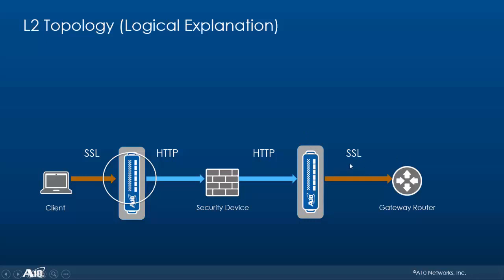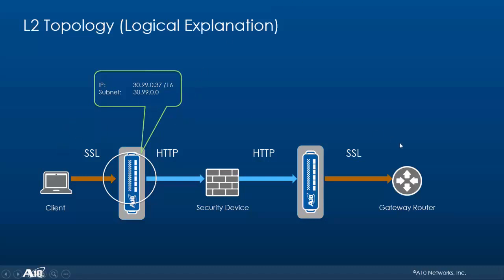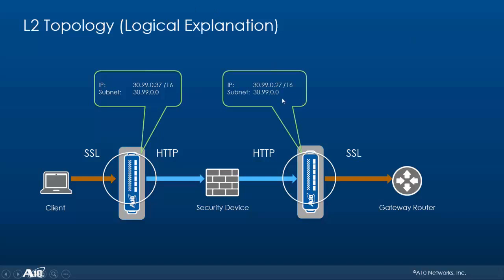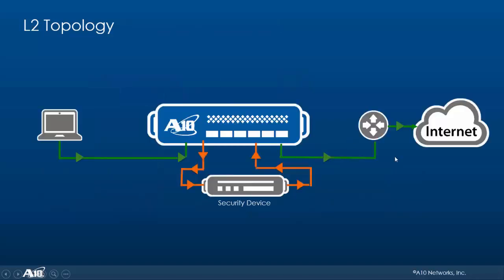We have two logical endpoints. The first is the inside machine — it has the IP address 30.99.0.37/16 and is in the same subnet as the client and gateway router. The second logical endpoint has the IP address 30.99.0.27/16 and is also in the same subnet. We will be grouping two interfaces together and giving them a single IP address on each side, since everything is in layer 2 and we don't need separate IP addresses for both interfaces.